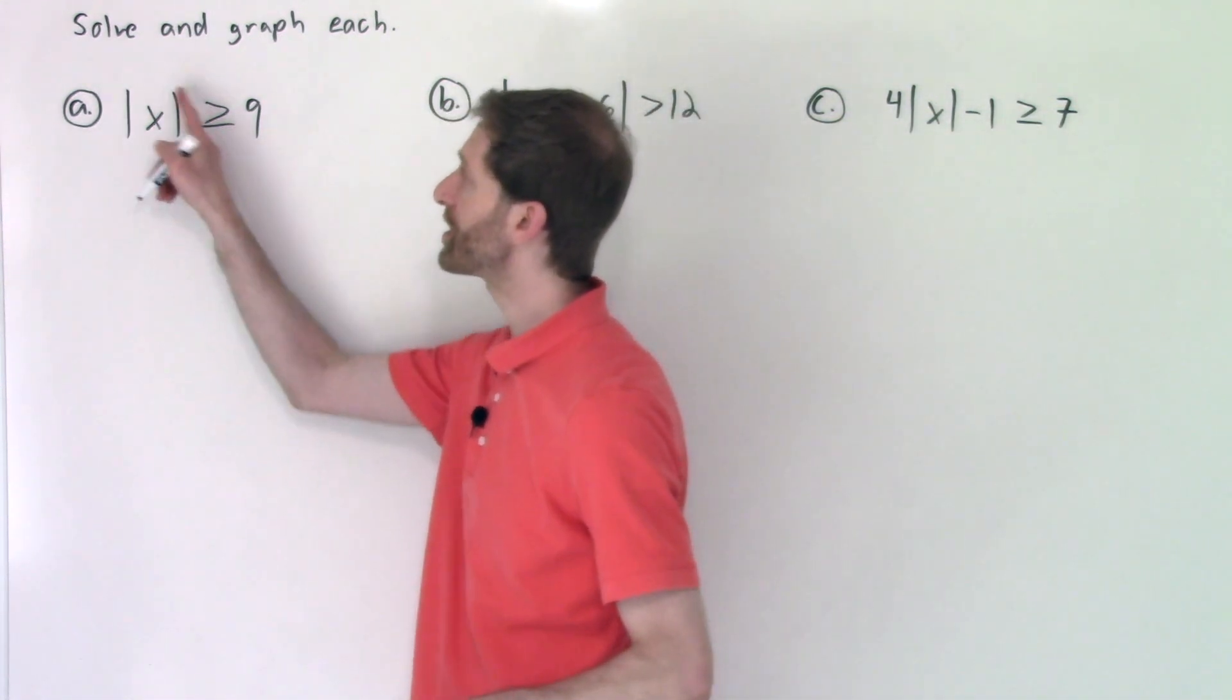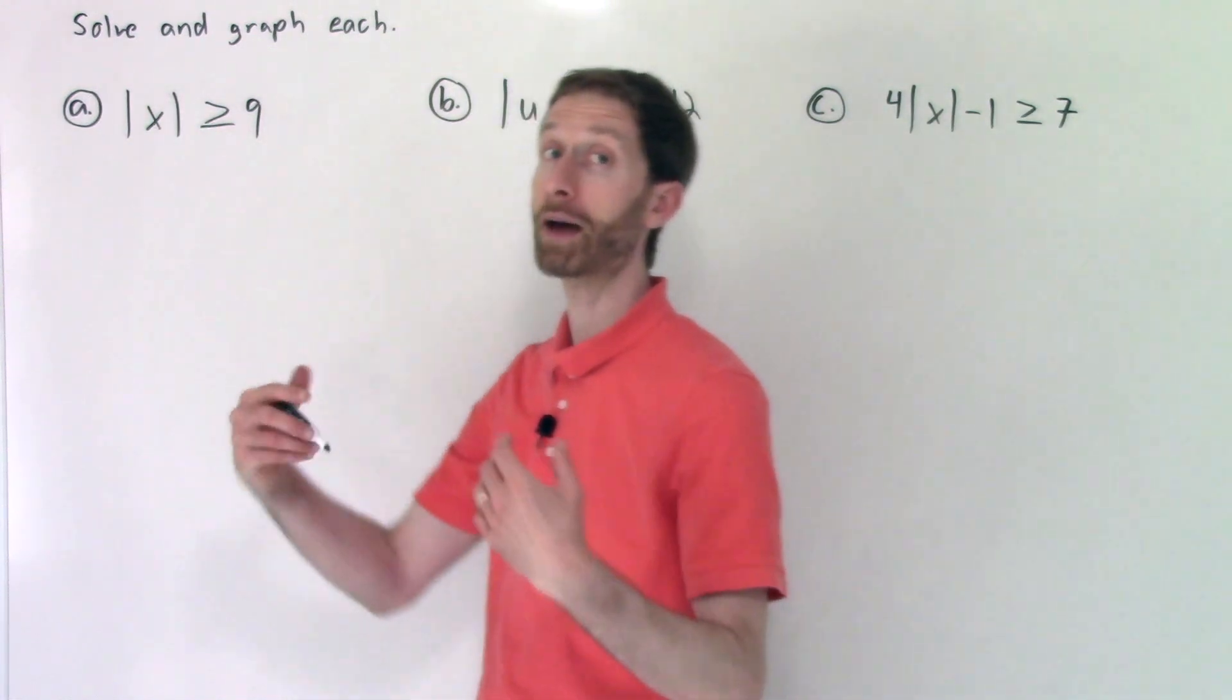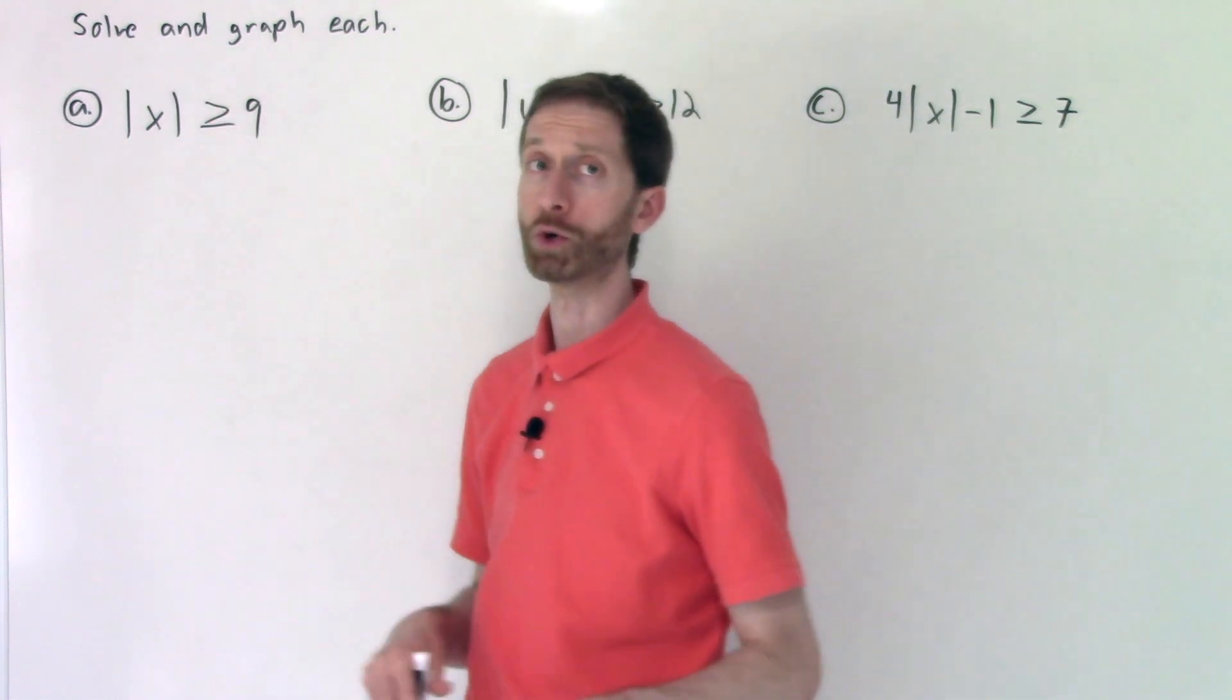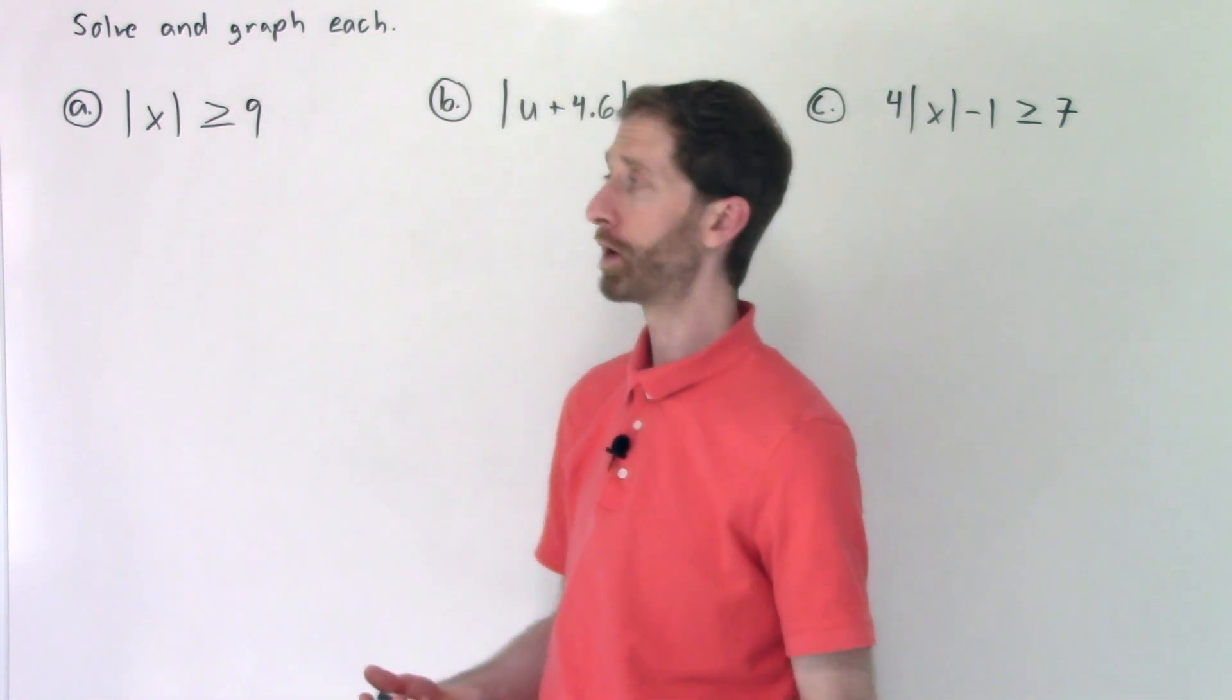So it says that the distance that X is from zero, that's what the absolute value means, the distance that X is from zero is more than or equal to nine. Okay, what does that mean?